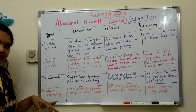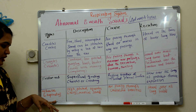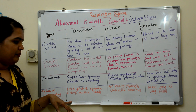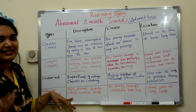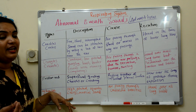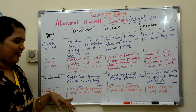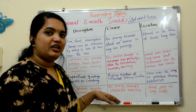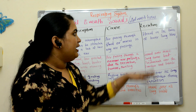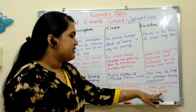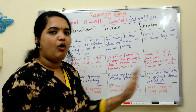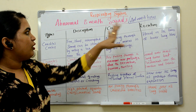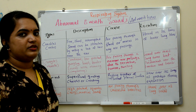The fourth adventitious sound is wheeze — a high-pitched, squeaking, musical sound caused by air passing through constricted bronchioles. It is heard over all lung fields during expiration. These are the main abnormal breath sounds.